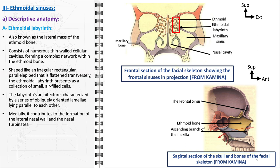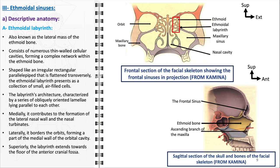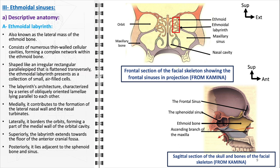Medially, the ethmoidal labyrinth is integral to the formation of the lateral nasal wall and the nasal turbinates, influencing airflow and the filtration process. Laterally, the labyrinth borders the orbits, forming part of the medial wall of the orbital cavity. Superiorly, the labyrinth extends towards the floor of the anterior cranial fossa, highlighting its close relationship with the brain — infections or pathologies may spread from the sinuses to the cranial cavity. Posteriorly, the ethmoidal labyrinth lies adjacent to the sphenoid bone and sinus, which is significant for understanding drainage patterns and the potential spread of infections.